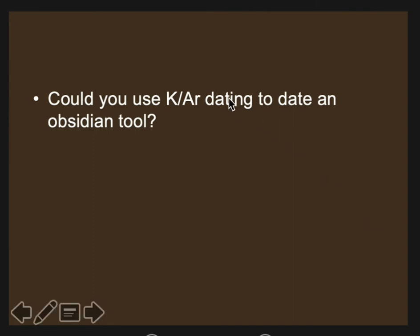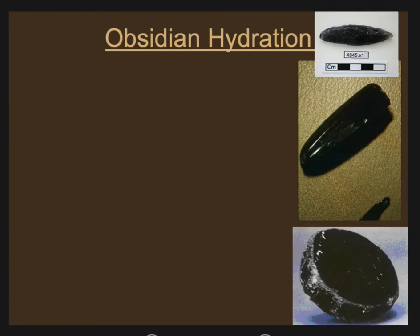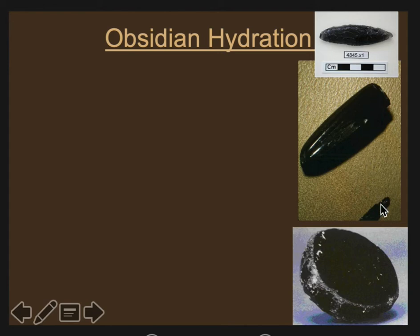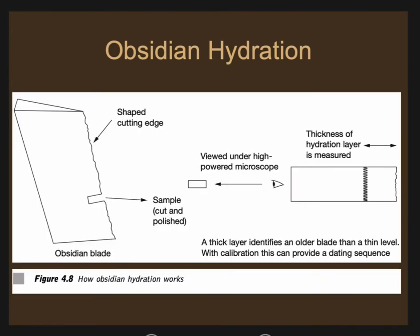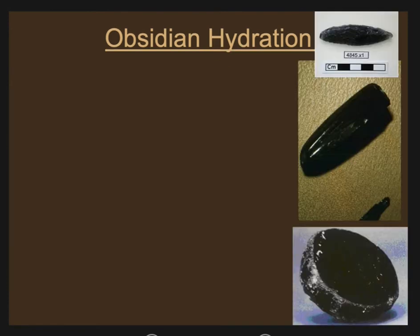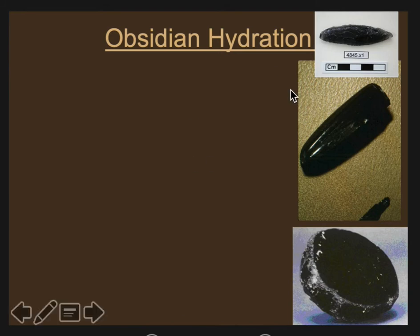Why couldn't you use potassium-argon dating to date an obsidian tool? After all, obsidian is a volcanic material. But if you use potassium-argon dating on an obsidian tool, what you're actually dating is not when the tool was made — you're dating how old the rock is, how long ago that magma formed. So you're not getting the date of the tool; you're getting the date of the rock. That's why you have to use obsidian hydration. Obsidian hydration might give you a date of 6,000 years ago, while potassium-argon dating will tell you the rock dates from 5 million years ago.